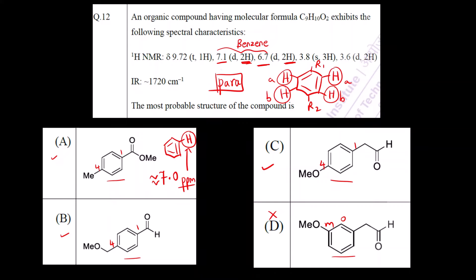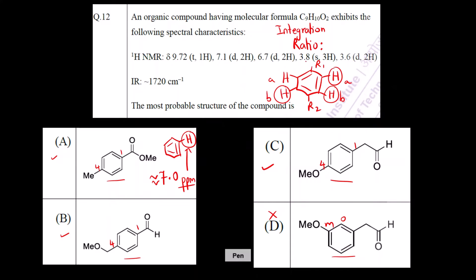Next we check the integration ratio — the set of protons visible in the spectrum. The two benzene proton signals are present in all of A, B, and C. Beyond those, there should be a single proton (1H), then a set of three protons (3H), giving a ratio of 1:3:2. However, for option A you can see there are two sets of three — a 3:3 ratio — so that integration ratio is incorrect and option A is eliminated.